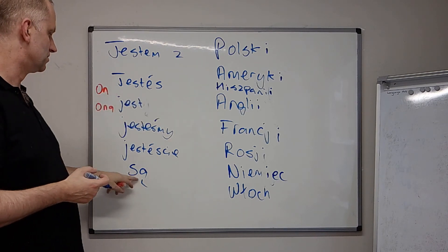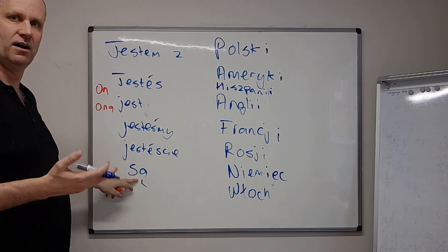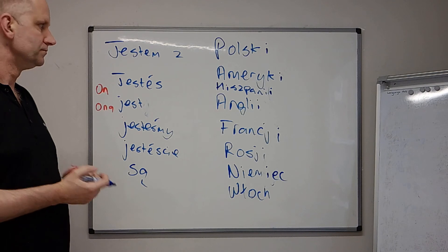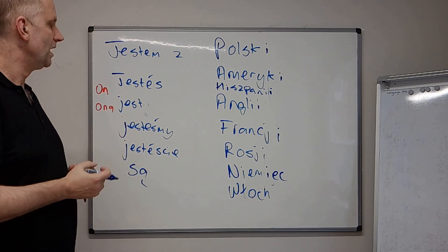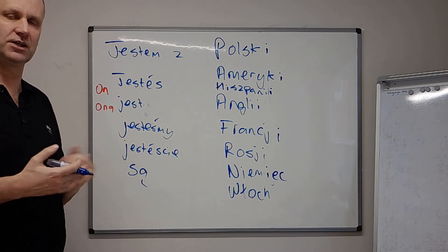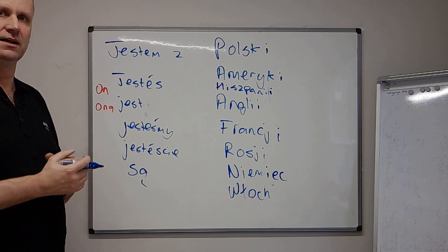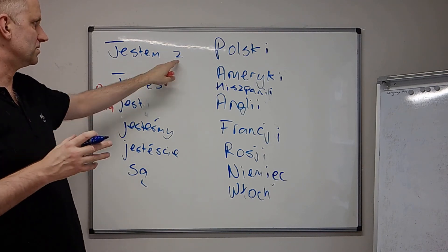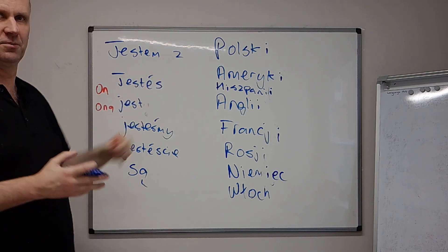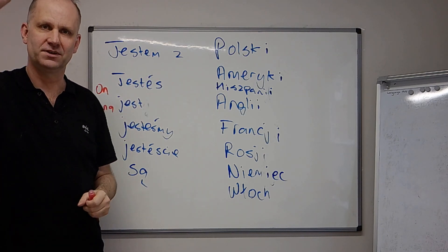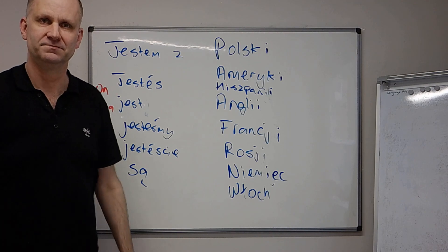So this is one way of saying your nationality — just using the country and the word ze meaning 'from'. Do widzenia — goodbye.